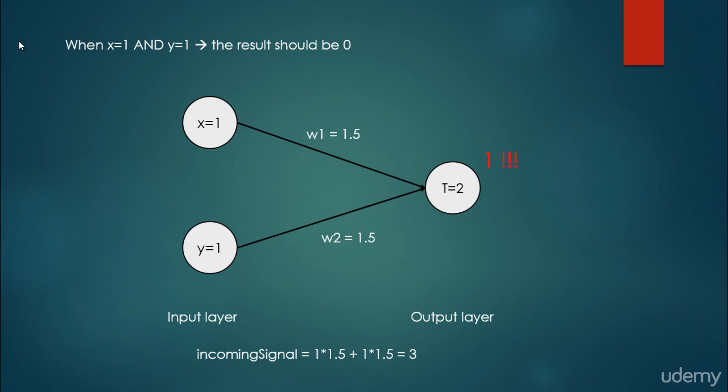With the help of this neural network, we can reproduce the AND logical table. The problem is how we calculate the weights. If weight w1 were equal to 5, for example, the neural network would not give us the right results. So we have to determine the correct weights, and we can do that with the help of training. In the next video, we are going to talk about how to train a neural network.